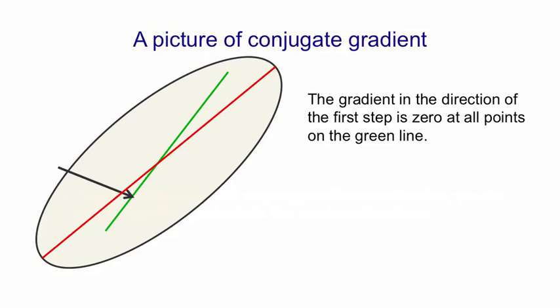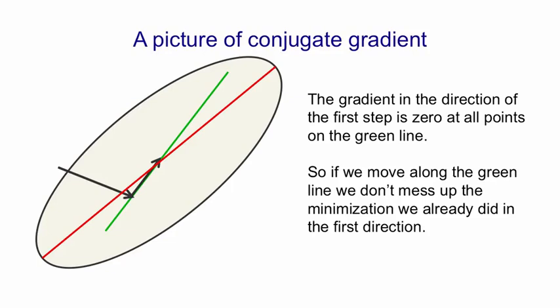So when we minimise in the first direction, we'll go slightly across the bottom of the ellipse. When we reach that minimum point, there's an interesting property of all the points that lie on the green line: the gradient in the direction of that black arrow is zero. So we can go anywhere along that green line and we won't destroy the fact that we're at a minimum in the direction of the black arrow. If we can keep doing that for many directions in a high-dimensional error surface, we'll eventually be at a minimum in many different directions. And if we're at a minimum in as many different directions as there are dimensions in the space, we'll be at the global minimum. So we take this first step of steepest descent, then we figure out the direction of that green line, and do a search along the green line to find how far we should go in order to minimise the error. We take our second step, and now in this two-dimensional space we'll be at the minimum — because we're at the minimum in the direction of the first step, and we're now at a minimum in the direction of the second step while still being at a minimum in the direction of the first step, and so that must be the global minimum.